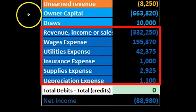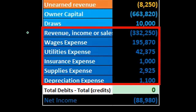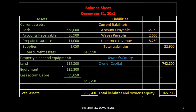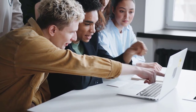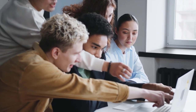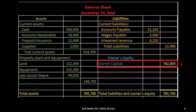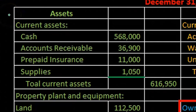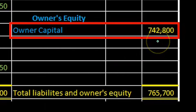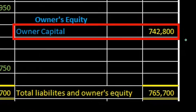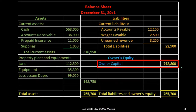All the blue accounts represent the equity section, so the income statement really is going to be part of total equity. On the balance sheet we're looking at a component of this capital account, and it's important to keep that in mind because we want to see where the income statement fits within the double entry accounting system and the accounting equation — assets, liabilities, and equity. The income statement gives us detail about this equity account over a period of time.